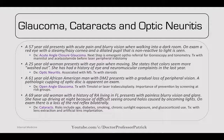A 57-year-old presents with acute pain and blurry vision when walking into a dark room. On exam, a red eye with a steamy or hazy cornea and a dilated pupil not reactive to light — this is acute angle-closure glaucoma. Next best step is emergent ophthalmologic referral for tonometry. Treat with mannitol and acetazolamide before laser peripheral iridotomy.